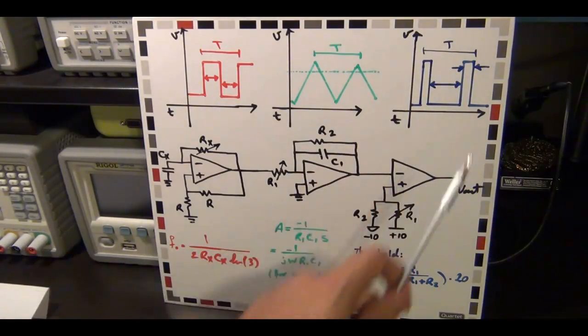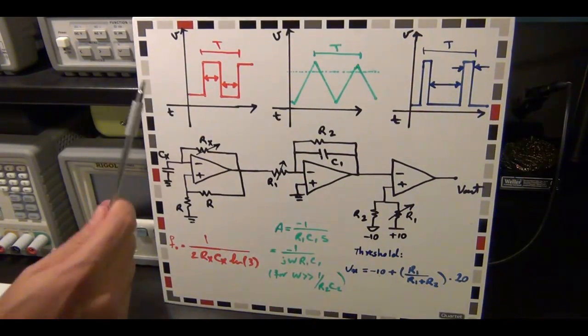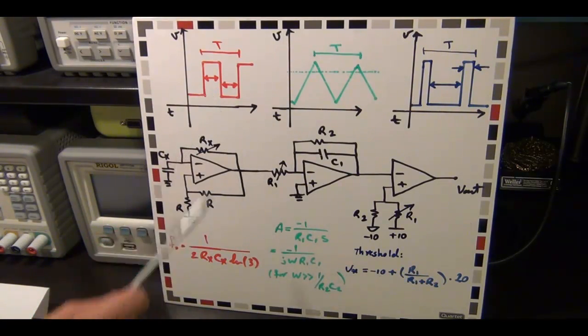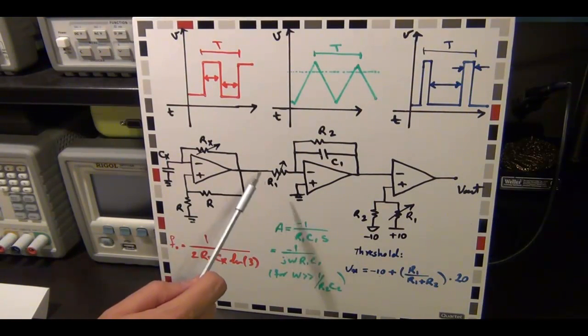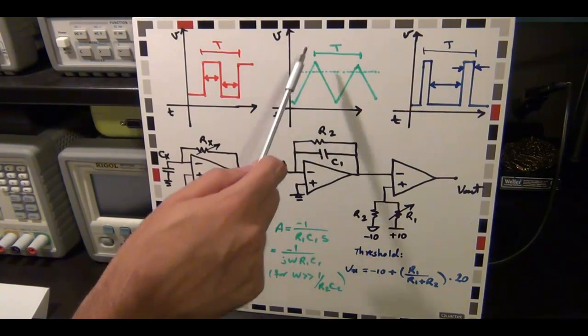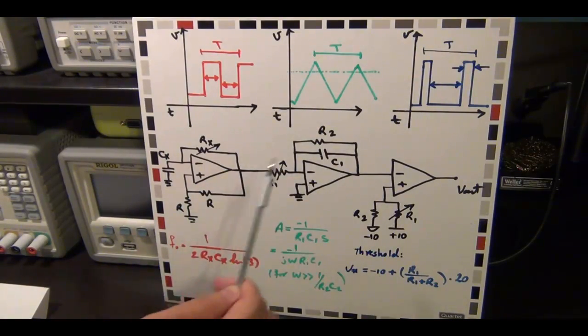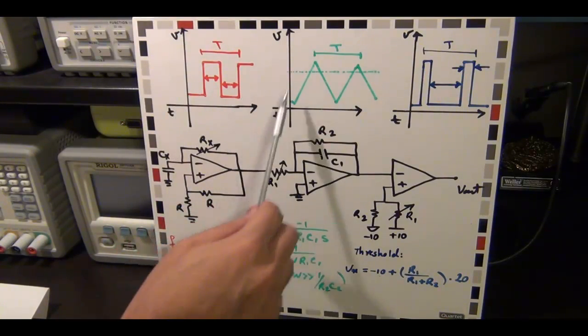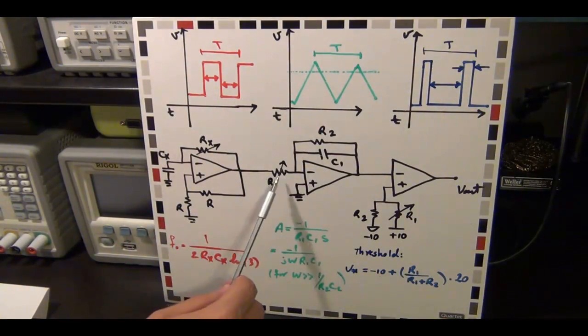And then finally we will measure the output here, to see if we are getting a pulse width modulation. By adjusting this resistor, I should be able to control the frequency, because Rx shows up here. By adjusting this resistor, I can make sure that I can get a perfect triangular wave, meaning that the cycle, the integration constant, is not too high or too low, so that based on the frequency, I can get a perfect triangular wave. So I can control R1, which shows up in this equation.